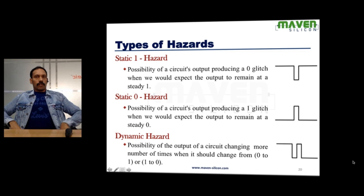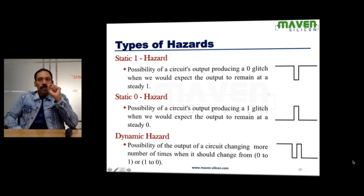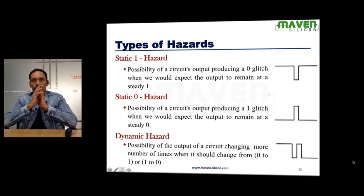Static 1 Hazard. We expect the output to be stable 1 but unexpectedly 0 glitch appears. It's called Static 1 Hazard.